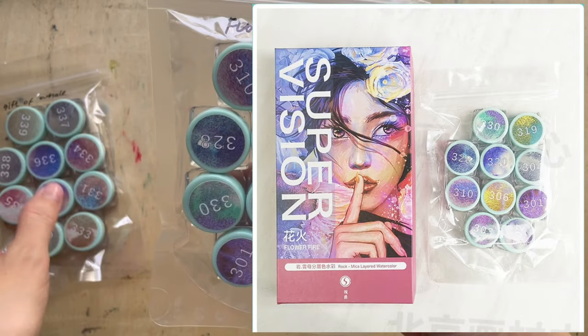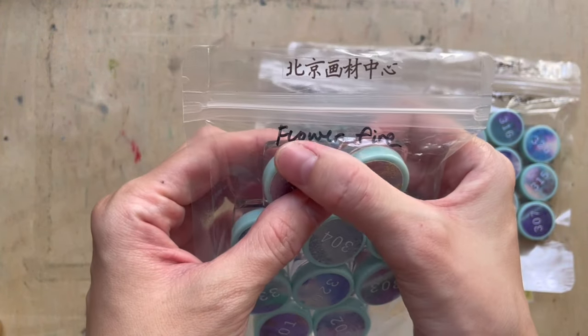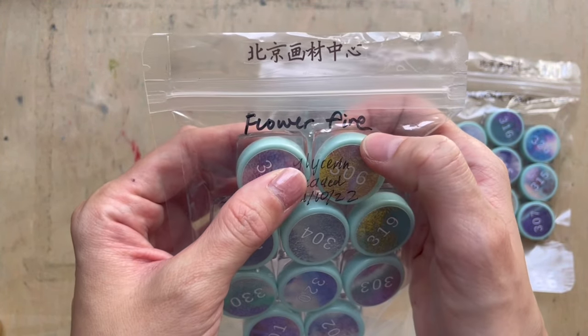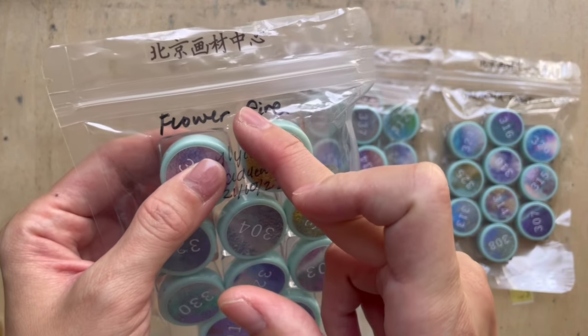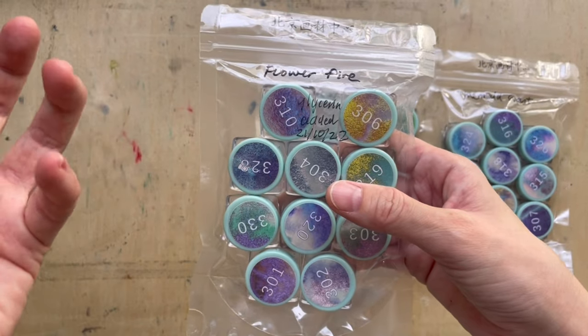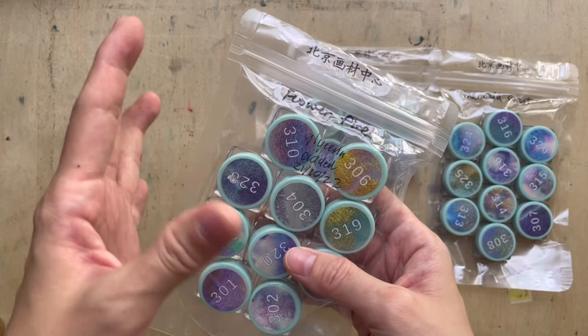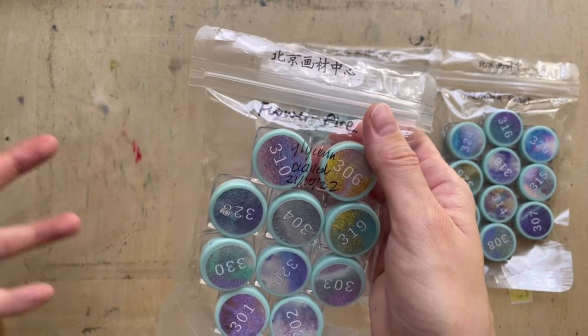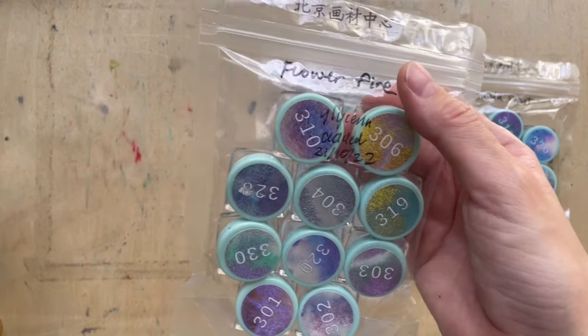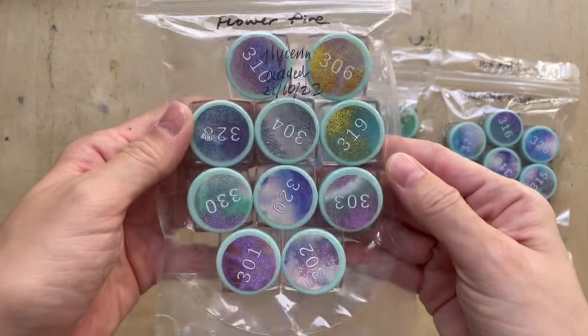I would start the video with Flower Fire first. Flower Fire is a funny name because it means flower is hua and fire means huo in Chinese, so hua huo. It could be huo hua because huo hua is fireworks. I don't know if it's supposed to mean fireworks or they just want to say it's like a flower on fire. So let's go and swatch this and show you how the colors look like.